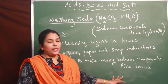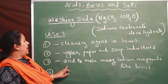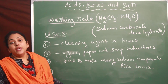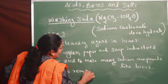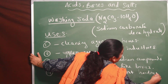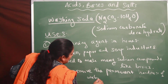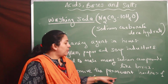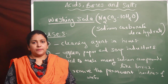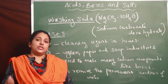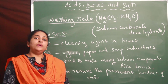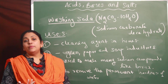The fourth use is to remove the permanent hardness of water - washing soda can be used for this. Now what is permanent hardness? There is hard water and soft water. Normal water is soft water. When magnesium or calcium salts like magnesium chloride, calcium chloride, magnesium sulfate, or calcium sulfate are dissolved in water, that water becomes hard.